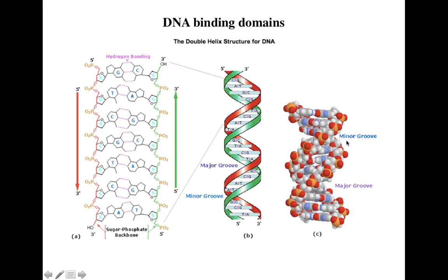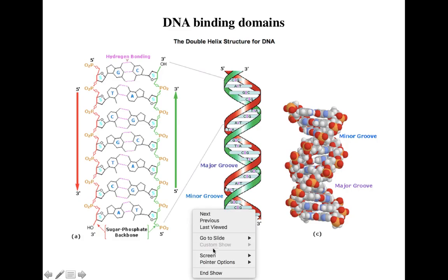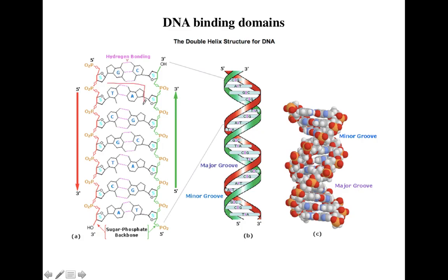As you can see here, this is the minor groove and this is the major groove of the DNA. Proteins generally interact with the nucleotides in the major groove. The sugar-phosphate backbone is indicated in red and blue, and on the inside you have the nitrogenous bases — A bonding with T, and G bonding with C. In this elaborated structure, G interacts with C and T interacts with A. A and T have a double hydrogen bond, while G and C have a triple hydrogen bond.